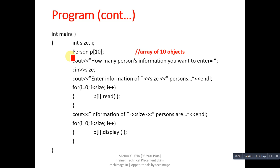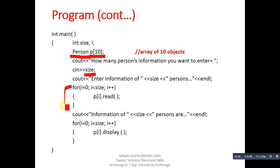Inside the main function, the statement `Person P[10]` is known as array of objects — P can store information of 10 persons. A cout statement will display how many persons' information you want to enter, and that number is stored in size. Then a loop repeats size times, and `P[i].read()` reads information of a particular person. Initially i is 0, so `P[0].read()` reads the 0th person's details.